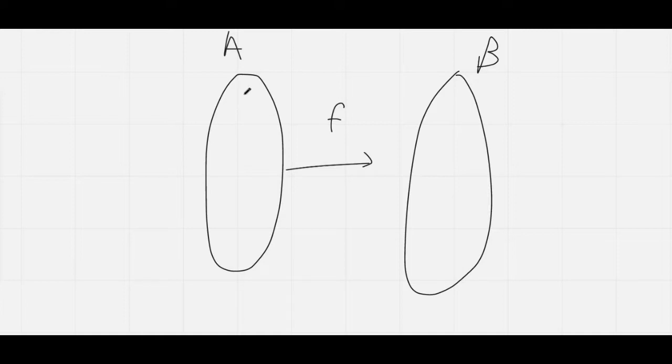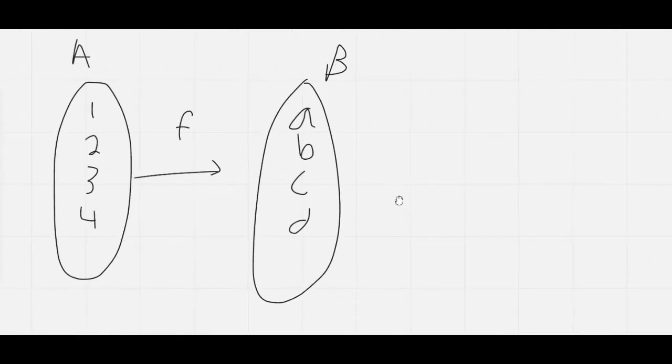So let's say set A contains 1, 2, 3, and 4. And B contains A, B, C, and D. So basically a way you would define F, like symbolically, would be F colon A arrow B.